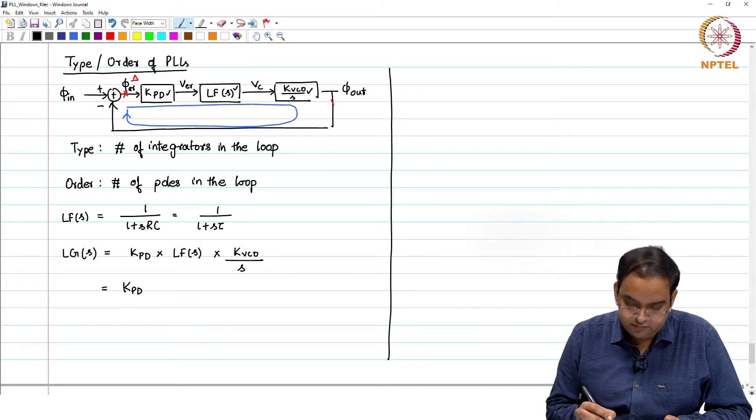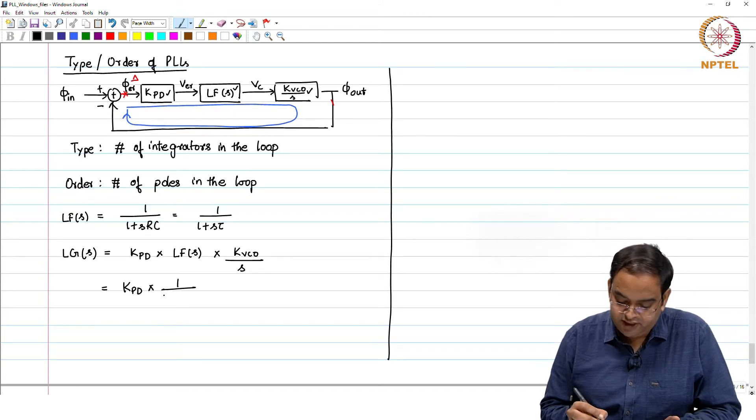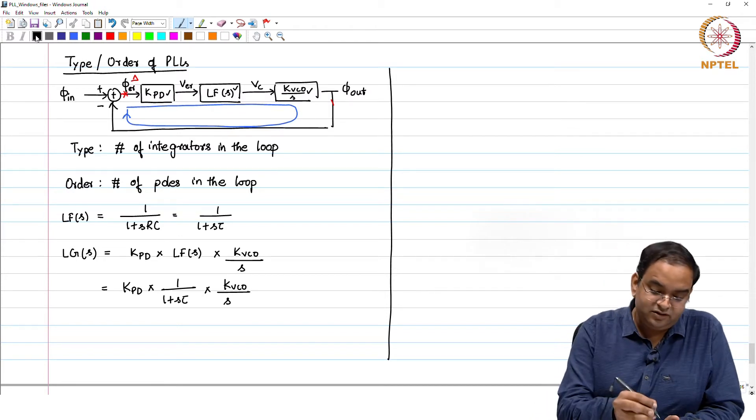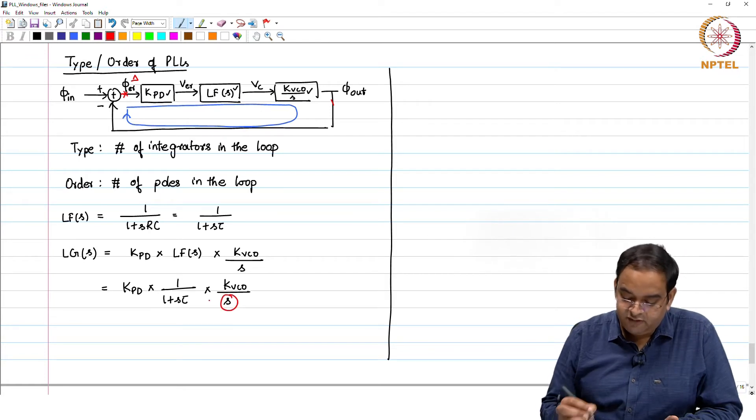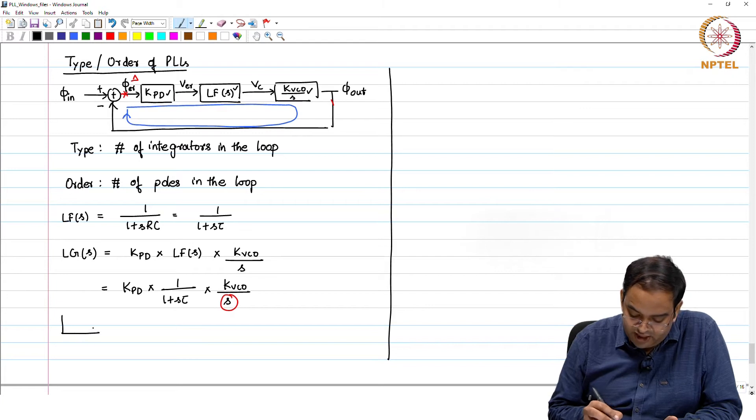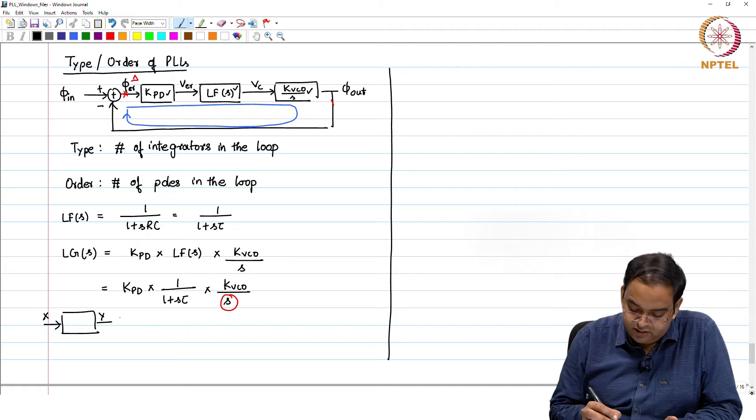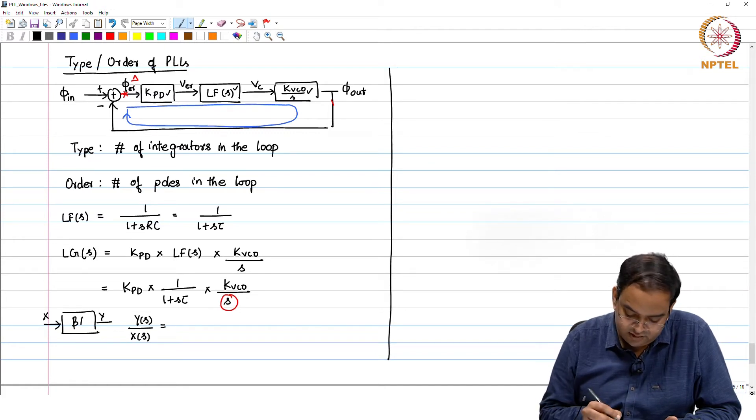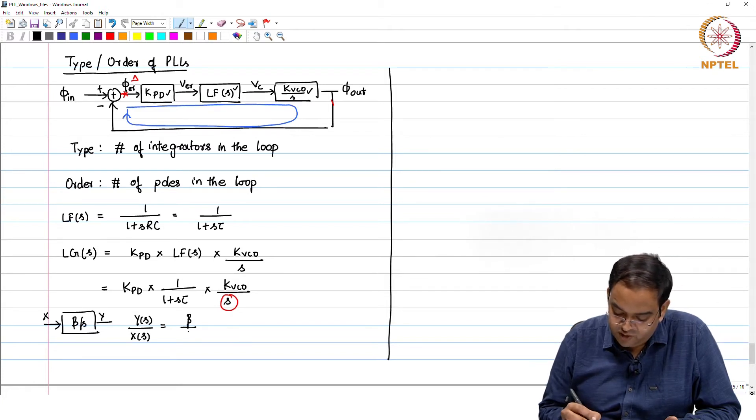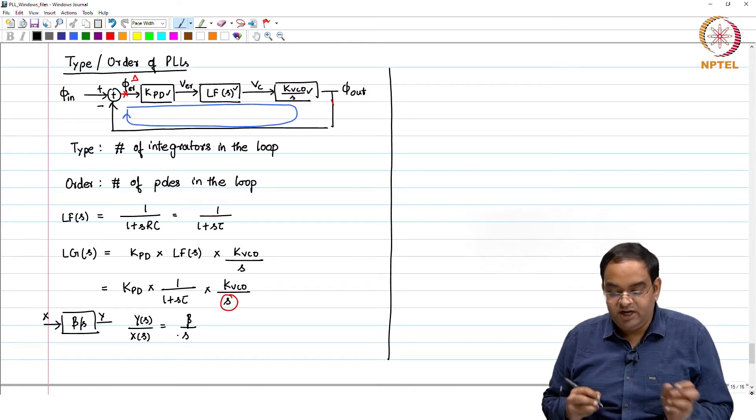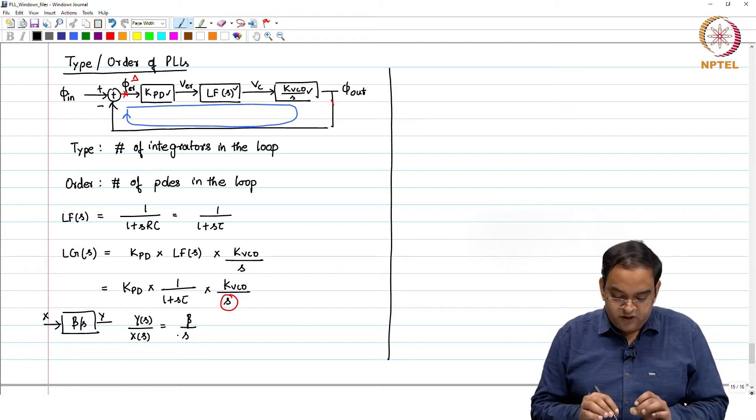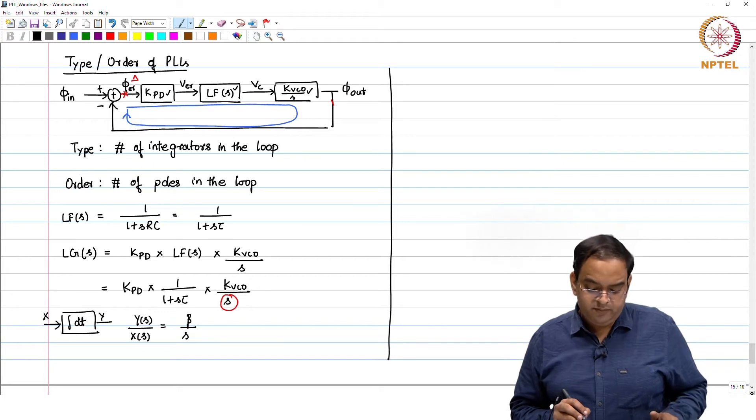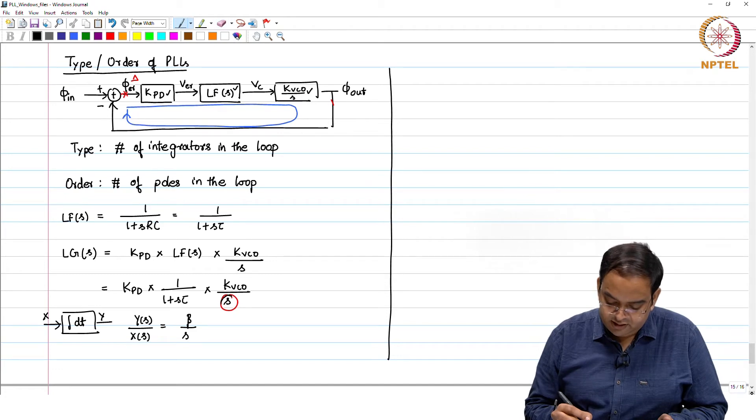I will just rewrite: kpd was constant in a given state, loop filter of S was 1 plus S tau into kvco by S. How many integrators are there in this particular loop? There is only one integrator. When we say integrator, it is like you have a block whose input to output transfer function y of S by x of S should be some constant, let us say beta. The constant is beta and you have a pole at 0. When you have a pole at 0 then this particular block will behave like an integrator. In our PLL loop there is one integrator always.